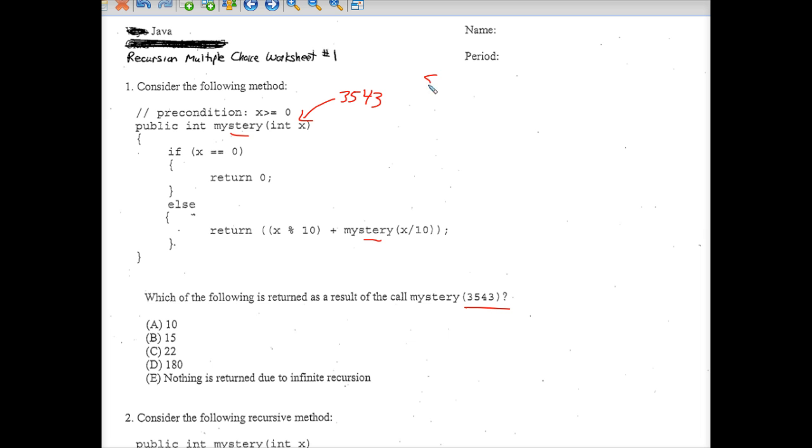So in the first stack frame, I call this stack frame number one. x is equal to the parameter x is equal to 3543. And we execute this if else statement. Now x is not zero, so false.